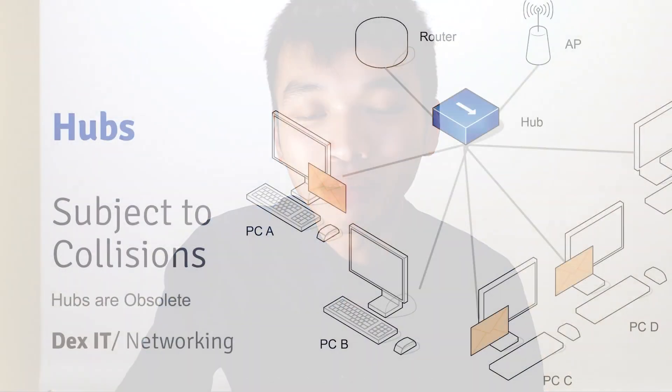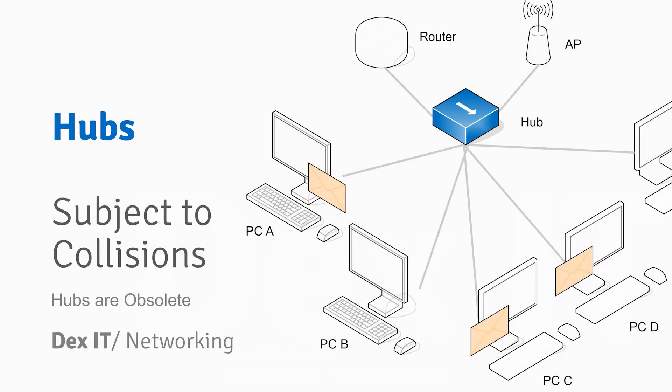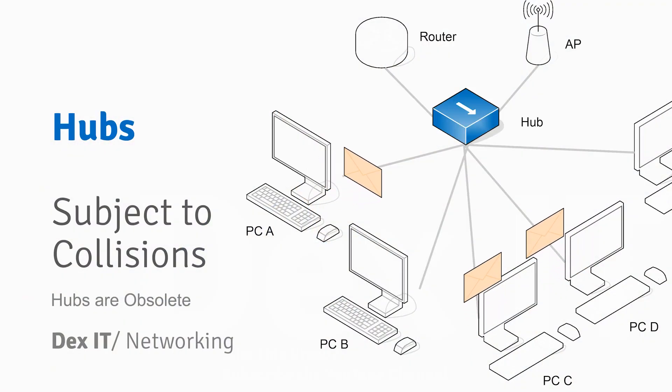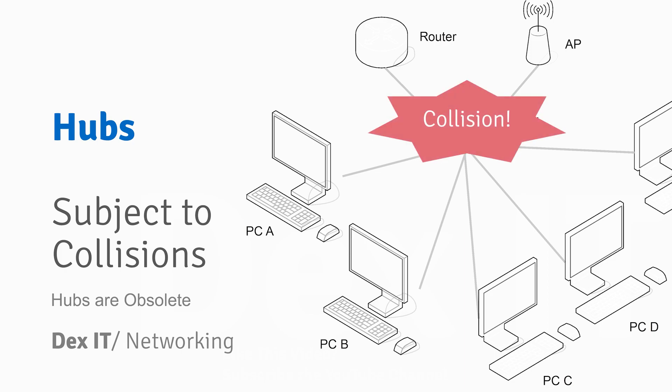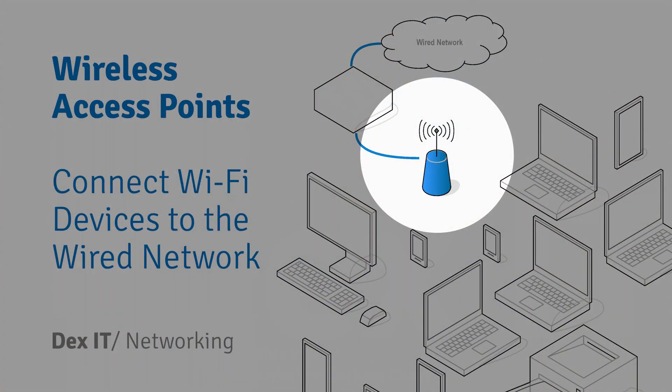There's another problem: if at the same time PC-C wants to talk to PC-B and PC-D wants to talk to PC-E, they will all transmit at the same time and no one will hear anything. This causes issues with performance, speed, reliability, and security — which is why we only use switches nowadays.